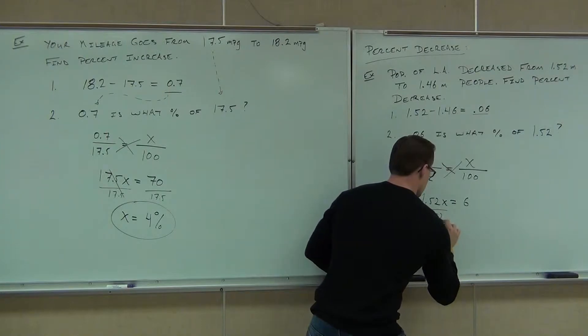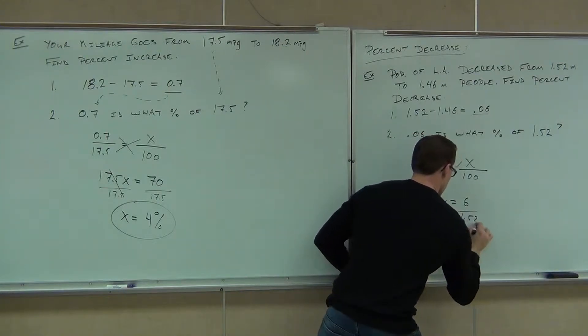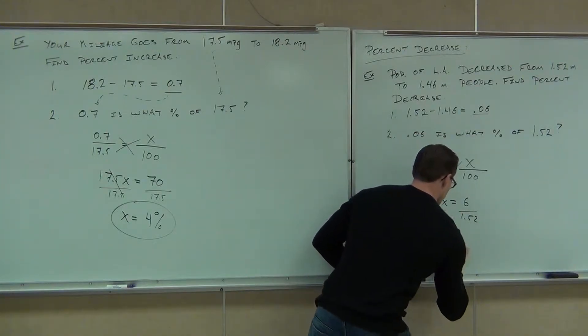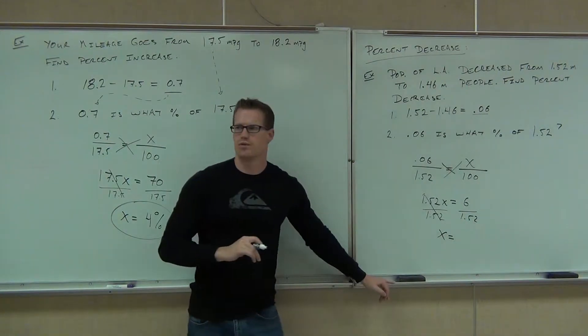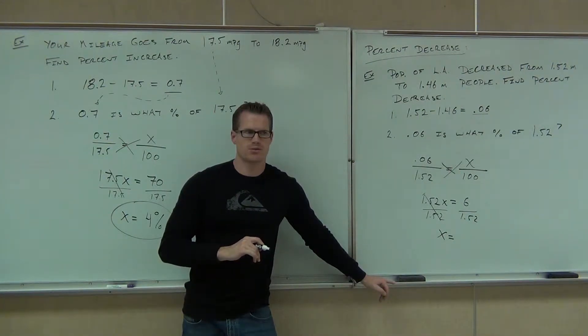You've got calculators, it's kind of nice. Can you tell me what is 6 divided by 1.52? 3.94. Did you have to round? 3.95.